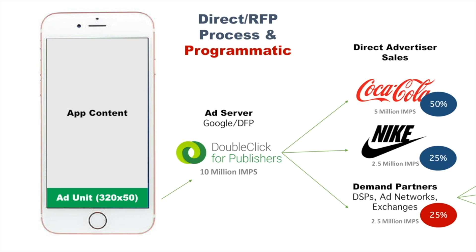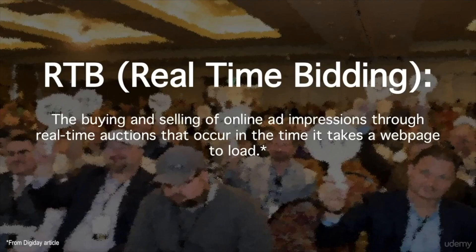That is a general explanation of programmatic — how it differs from a direct buy, and how in the real world the two work together. That process of filling those ad units takes place through a process called RTB, or real-time bidding.